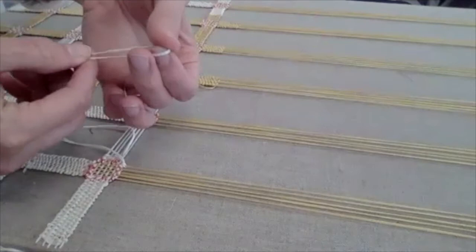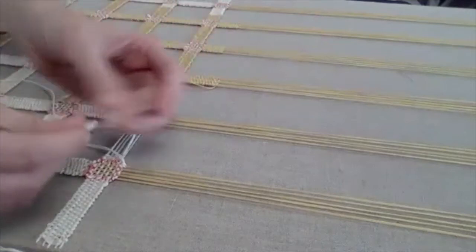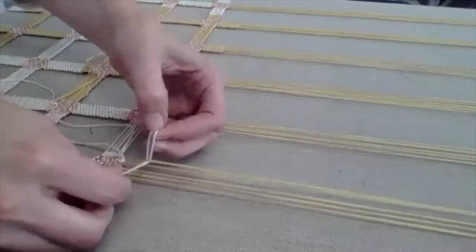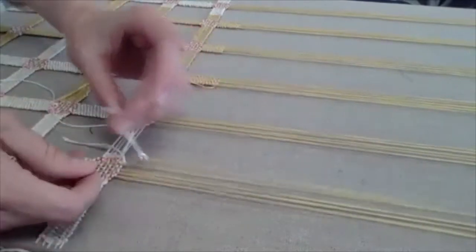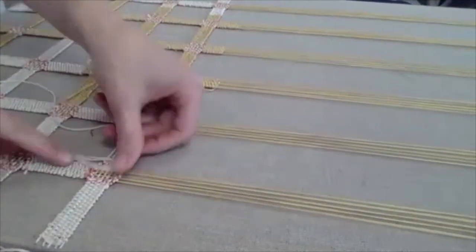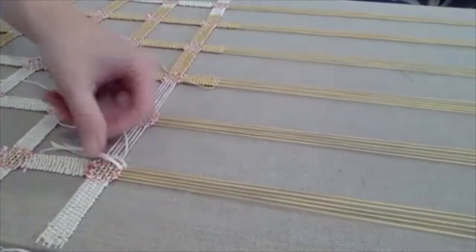And so then I'm just going to move along to the next piece of warp. It's one loop and then two pieces of fringe.